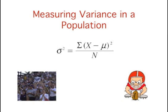The formula used to calculate variance in a population is shown here. For example, if we were measuring variance in the weight of a population of college football supporters, we would subtract the mean weight of college football supporters from each individual's weight, square the value, sum those squared values, and divide the answer by the number of college football supporters in our population.